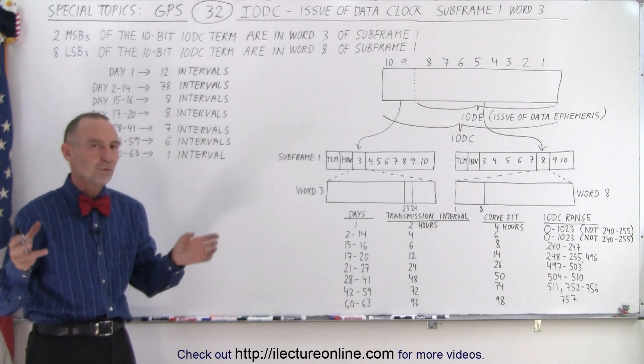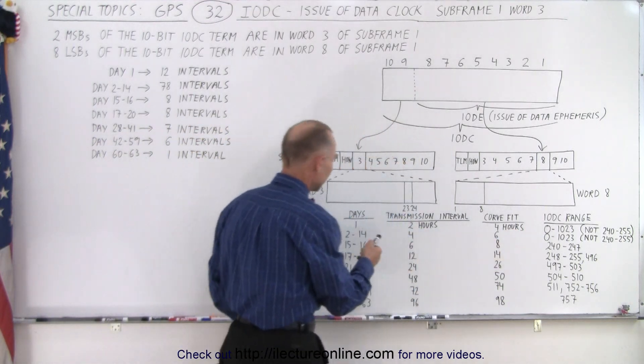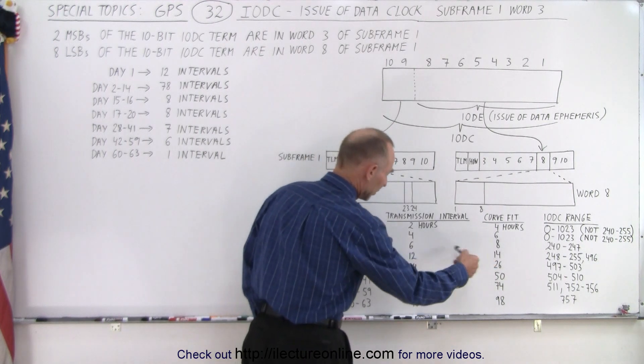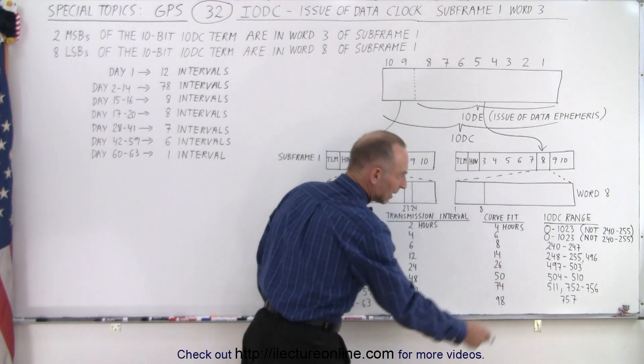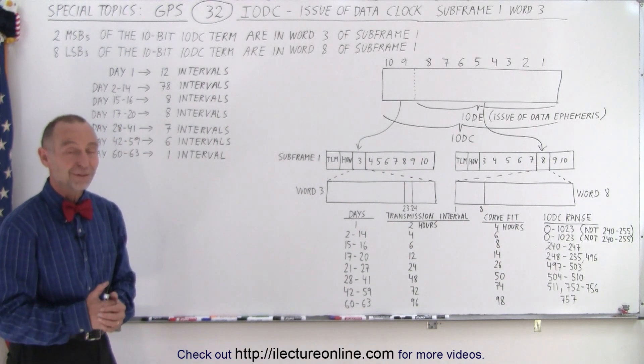So it's simply an indication of which data set you're using, and depending upon what numbers you get, you know that you're either getting a new one every 2 hours, every 4 hours, or every 6, 12, or 24 hours, indicated by the IODC number you're receiving from the SV. And that is how it's done.